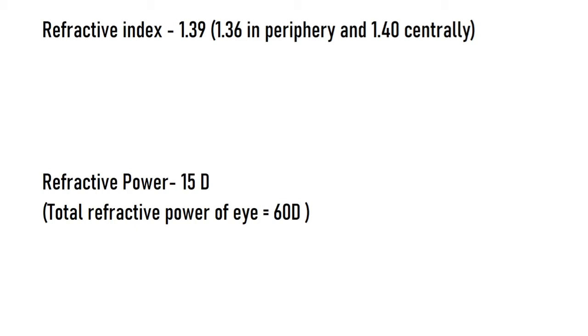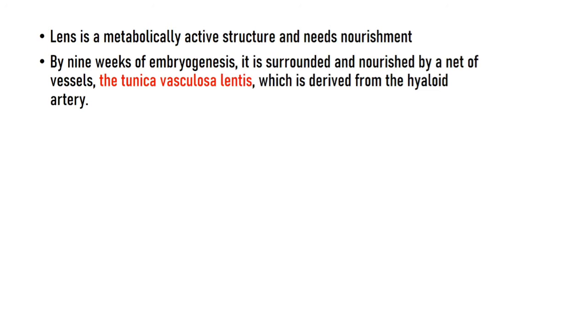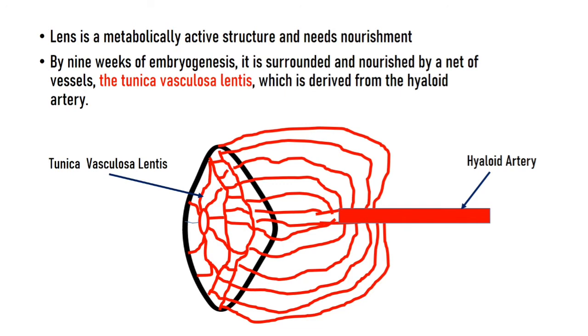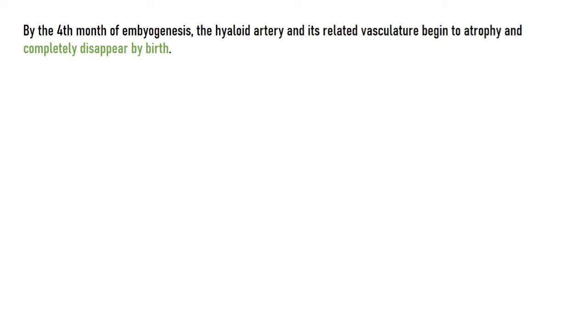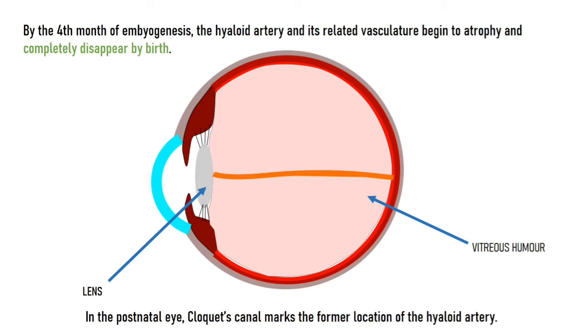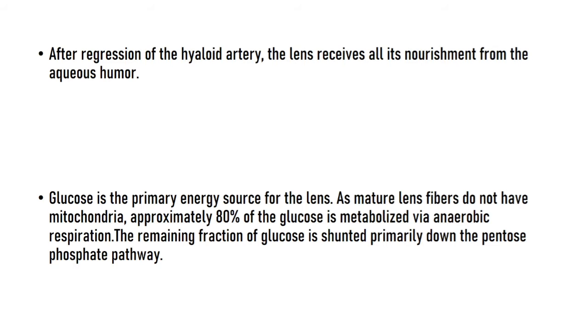The lens is a metabolically active structure. By 9 weeks of embryogenesis, it is surrounded and nourished by a network of vessels known as the tunica vasculosa lentis, derived from the hyaloid artery. By the fourth month of embryogenesis, this vasculature begins to atrophy and completely disappears by birth. After birth, the hyaloid artery is represented by Cloquet's canal. The lens then receives all its nourishment from the aqueous humor. Glucose is the primary energy source; about 80% is metabolized by anaerobic respiration while the remaining 20% is shunted to the pentose phosphate pathway.